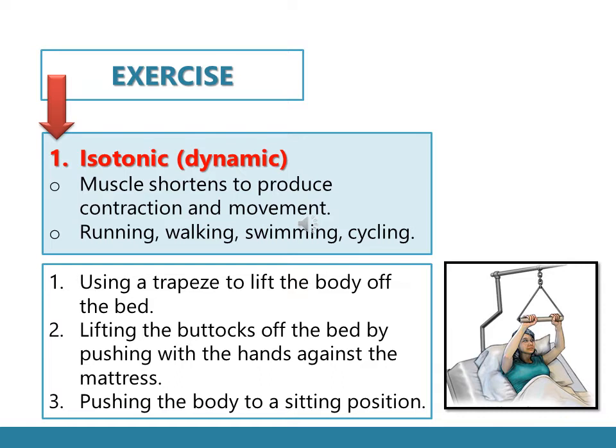A second example is lifting the buttocks off the bed by pushing with the hands against the mattress, causing muscle contraction in the hands and arms — this is isotonic exercise. A third example is pushing the body to a sitting position: we ask our patient to sit on the bedside chair and push the body up, which also produces isotonic exercise.